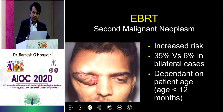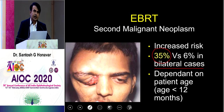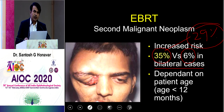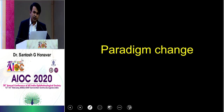EBRT is currently not performed as primary treatment because it has a very high rate of second malignant neoplasm, especially in heritable cases. Just by doing external beam radiation in retinoblastoma, you are increasing mortality by 29%. You may save the child's eye initially, but 5, 10, or 15 years later the child will succumb to a second malignant neoplasm.